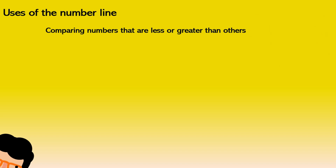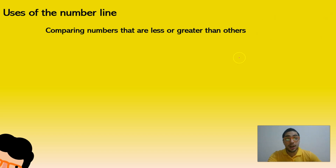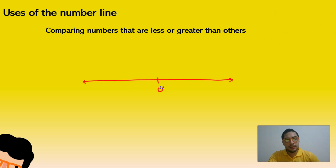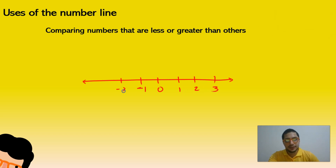Now we're going to see the use of the number line — why is it useful. The first thing is that you can actually compare numbers that are less or greater than other numbers. We just have to remember that numbers to the right are going to be higher than numbers on the left. So if we have three, we know that three is higher than minus one, and that minus one is going to be higher than minus three.